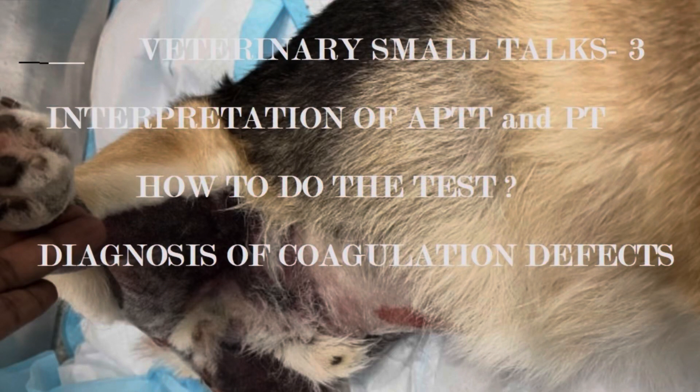Hello everyone, welcome to another video of Veterinary Small Talks. Today we are going to see the bleeding disorders in pets. We'll start with the basics of coagulation issues encountered in pet practice, how to diagnose it. We'll also see a demo of how to do a PT and APTT test. I hope you find this useful at some point of your clinical practice.